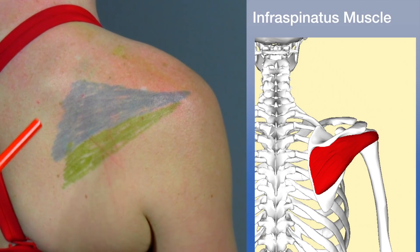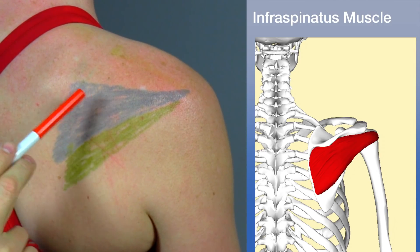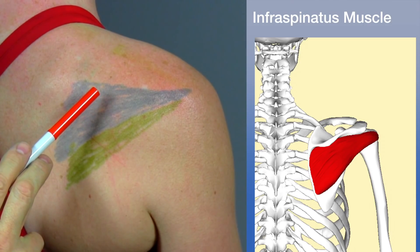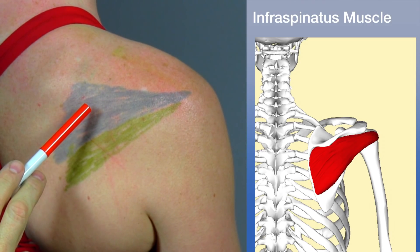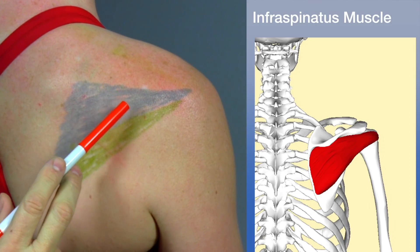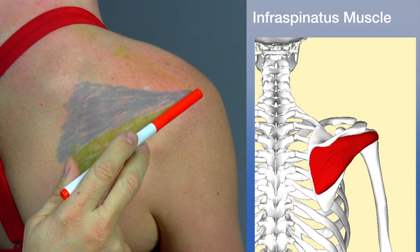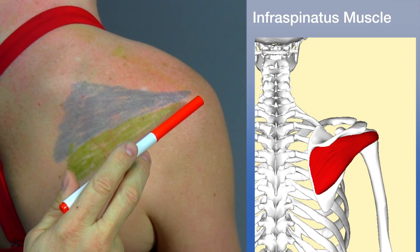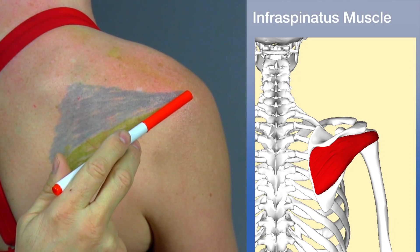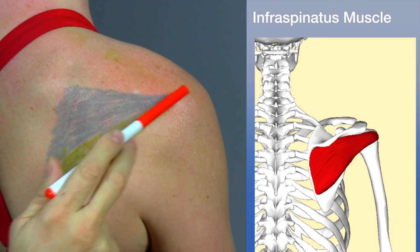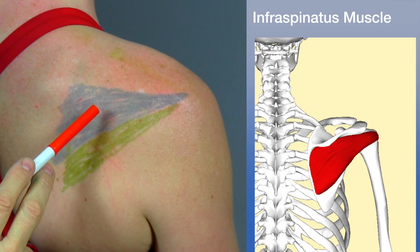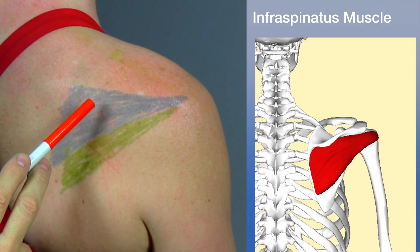The next muscle is the infraspinatus, shown in blue. It originates from the infraspinous fossa, and its tendon passes above the capsule of the glenohumeral joint, inserting on the greater tubercle at a point posterior-inferior to the supraspinatus insertion. Its actions are lateral rotation and participation in abduction.